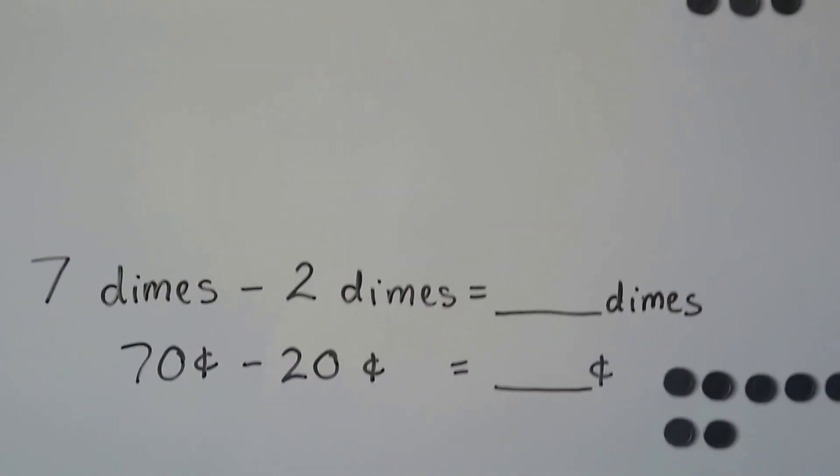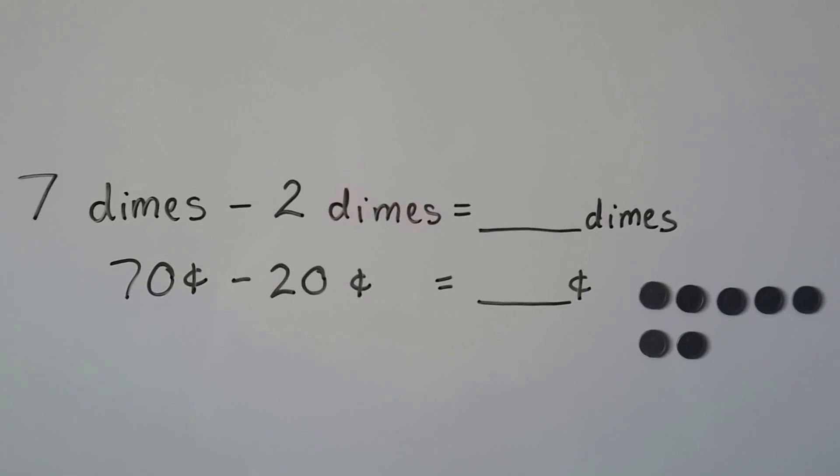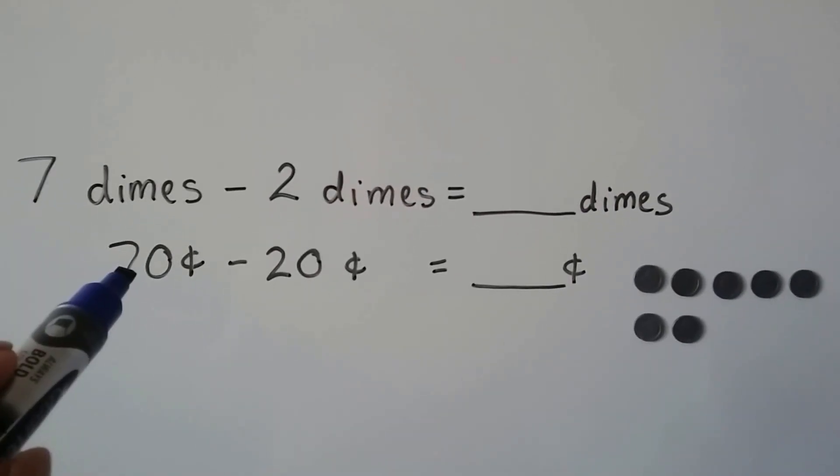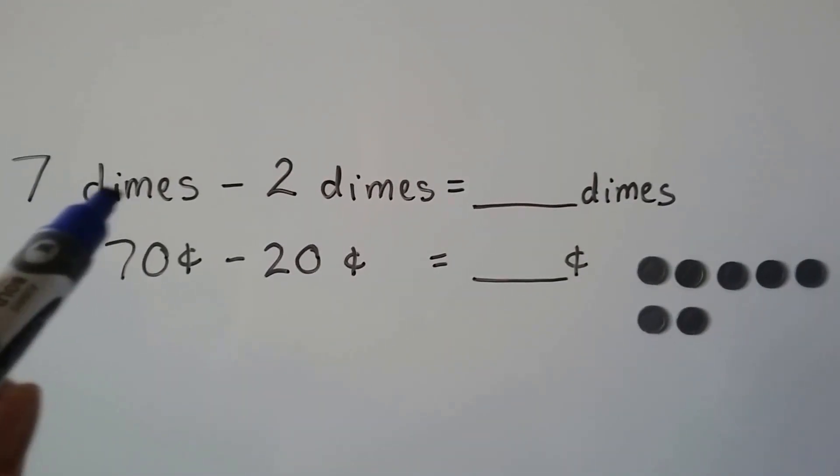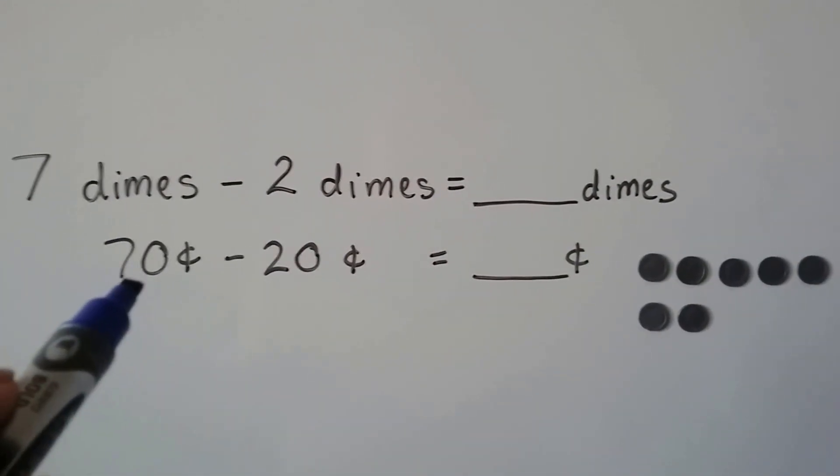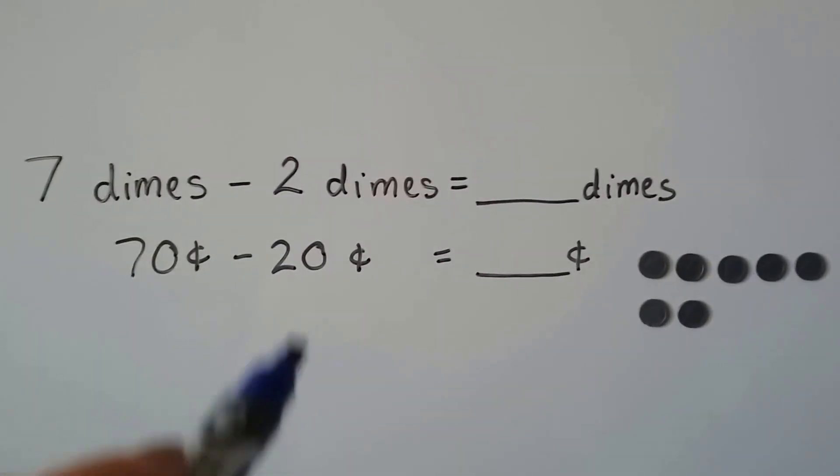Let's try one last one. We have seven dimes minus two dimes. That would be seventy cents minus twenty cents. That's seven tens because each dime is a ten. That's seventy. That's two tens because each dime is a ten. That's twenty.